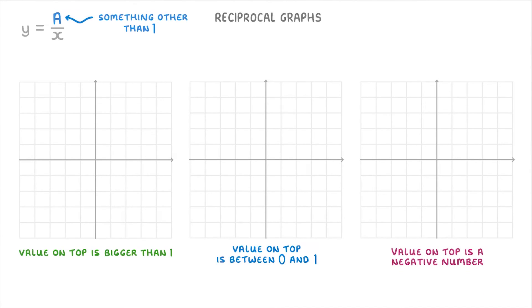To see how each of these things changes the graph, let's faintly draw the basic y equals 1 over x graph on each of the grids, so that we can compare them to our new lines.